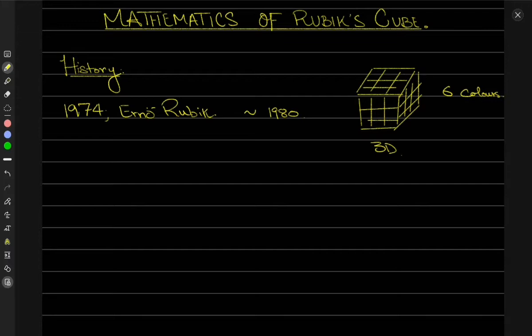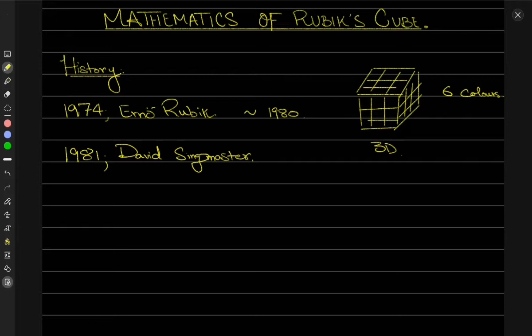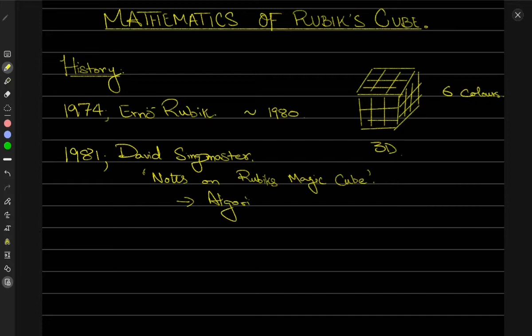A year later, in 1981, a person known as David Singmaster — a very important person in the further development of the mathematics of the Rubik's Cube — essentially published his notes called 'Notes on the Rubik's Magic Cube.' In these notes he performed the first analysis of the Rubik's Cube and provided an algorithm that would solve it.